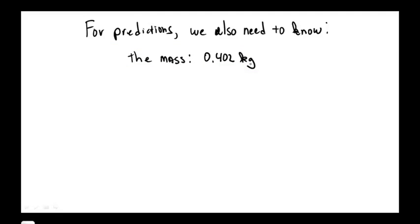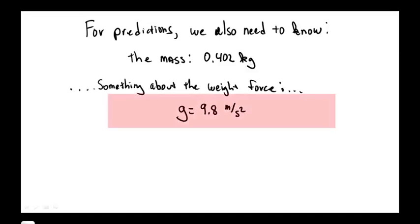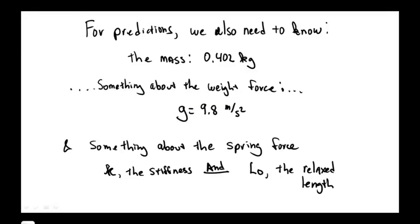We also need information to specify the interactions for our model. For the weight force we will need in addition to the mass the strength of the gravitational field. For the spring force we know from past lectures that we'll need both the spring stiffness k and the relaxed length L0. We're going to discuss now how to get those quantities from the video observations we already have in hand without doing any more experiments.